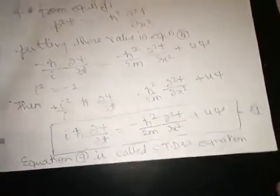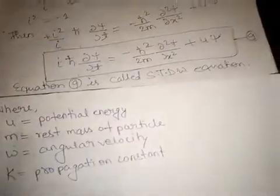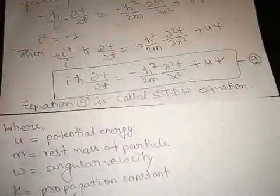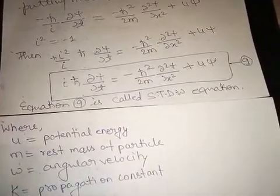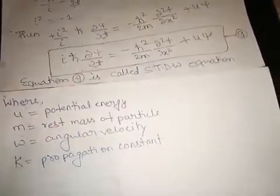Where U is potential energy, M is mass of particle, ω is angular velocity, and K is propagation constant.